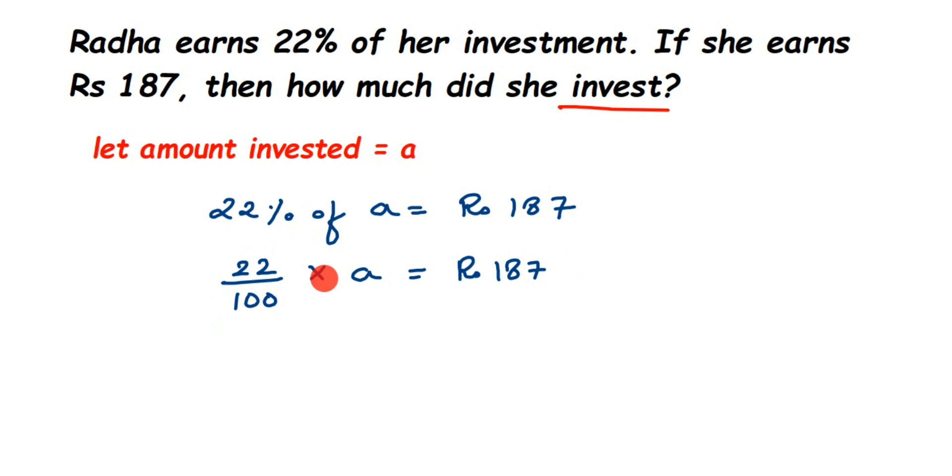I can do it in one step or you can do it in separate steps. I'm going to show you in two different steps here. First I'm going to transpose 100 and second I'm going to transpose 22. You can do this in one step if you want to. So 22 multiplied by a is equal to, now 100 is in division, transpose this to the other side, it comes in multiplication, it will be rupees 187 multiplied by 100.